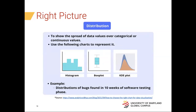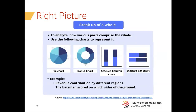For distribution — showing the spread of data values over categorical or continuous values — you use a histogram, a box plot, or a kernel density estimate plot, which shows the probability density function. For example, distribution of bugs found in 10 weeks of software testing could use one of these plots. For breakup of a whole — composition of a data series — you could use a pie chart or donut chart.